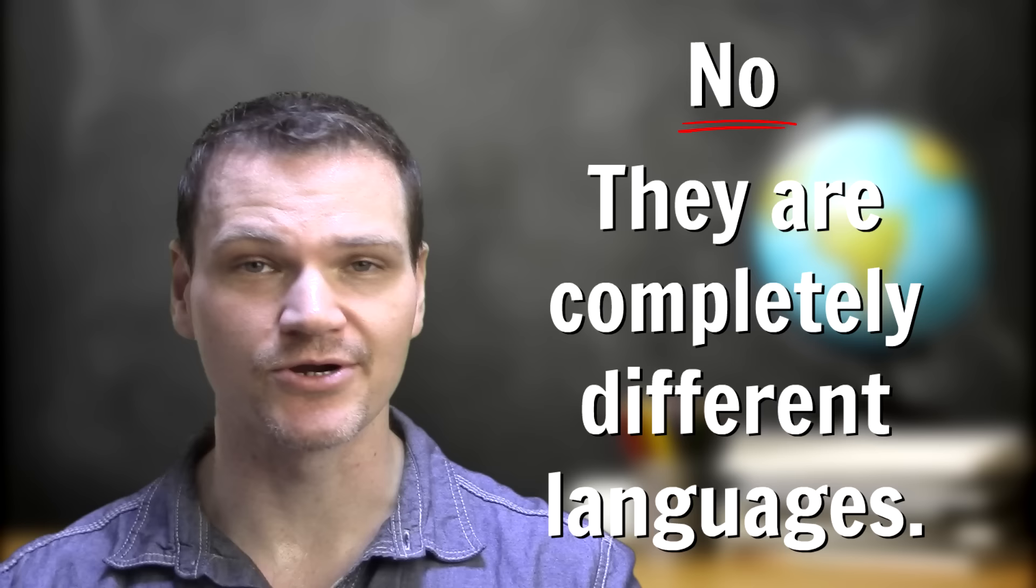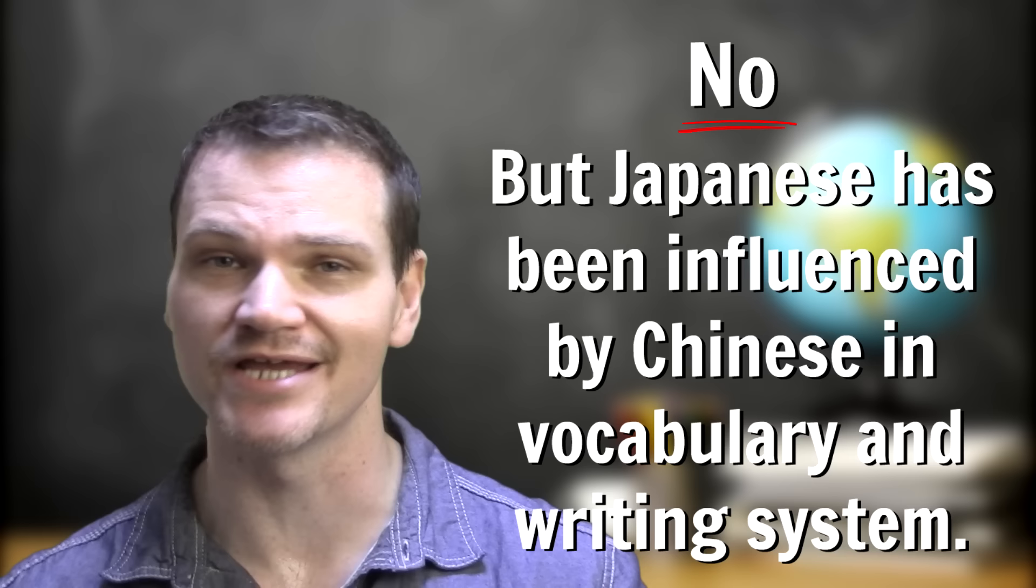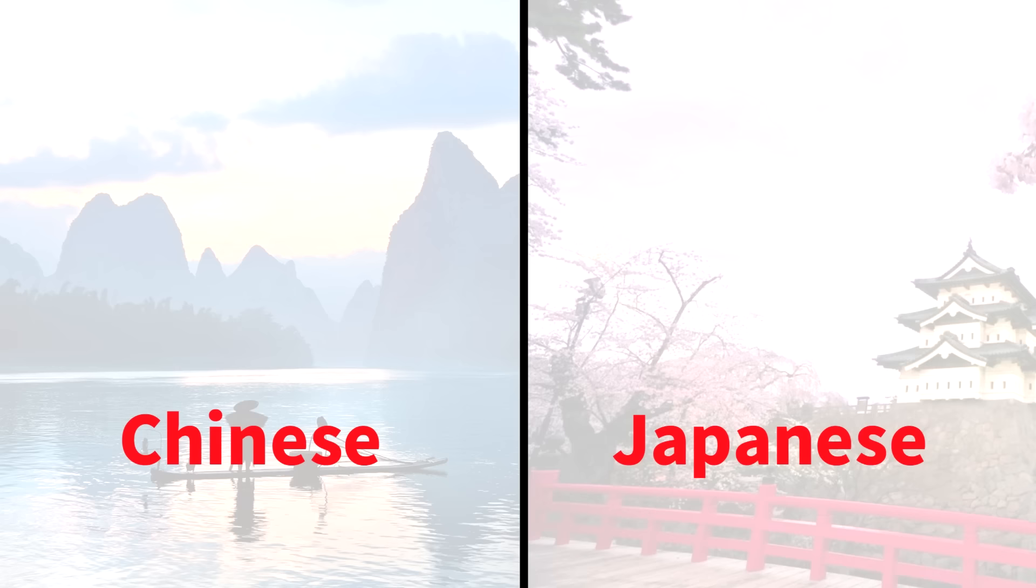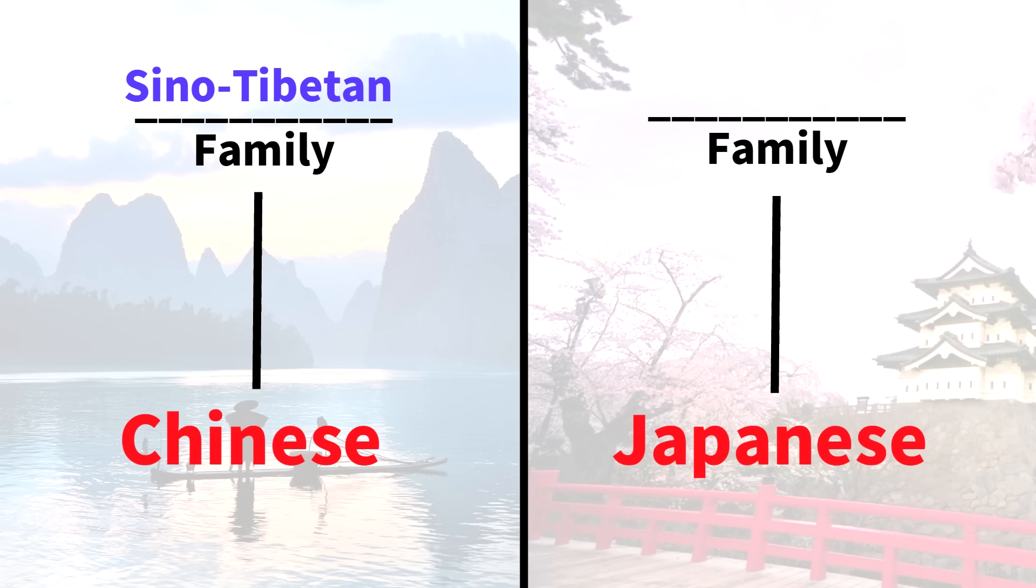Well, the short answer is no. They are completely different languages. But Japanese has been highly influenced by Chinese in its vocabulary and in its writing system. Chinese and Japanese do not share any common origin and they don't belong to the same language family. The Chinese languages belong to the Sino-Tibetan language family, and Japanese, as far as we know, belongs to the Japonic language family.